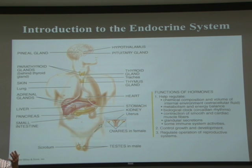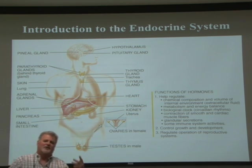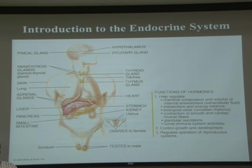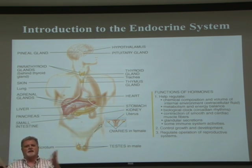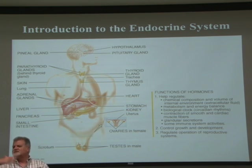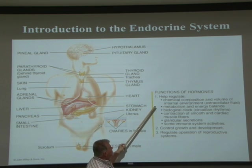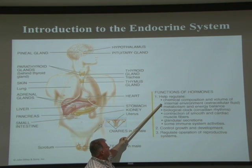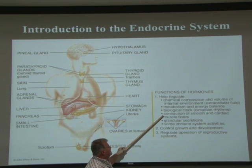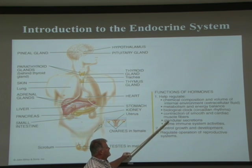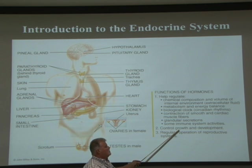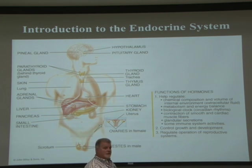Homeostasis is created by two systems: the nervous system, done at the end of last quarter, and the endocrine system, done at the end of this quarter. The endocrine system helps maintain homeostasis, including chemical composition, volume of the internal environment, metabolic and energy balance, biological clock, circadian rhythms, contraction of smooth and cardiac muscle, maintenance of secretions, the immune system, controls growth and development from a single cell to a multicellular adult, and regulates the reproductive system.